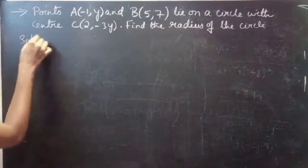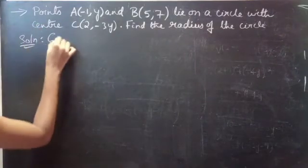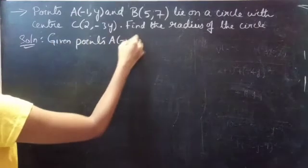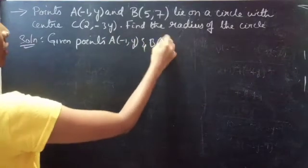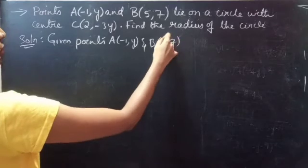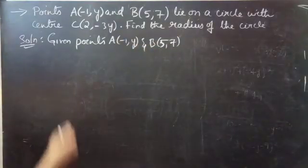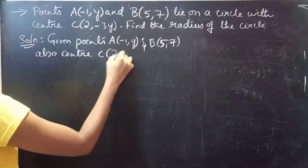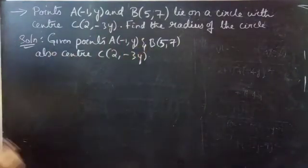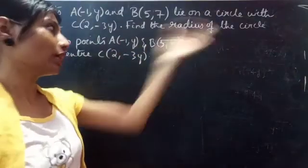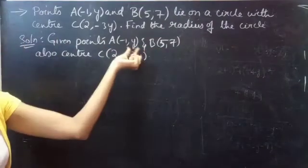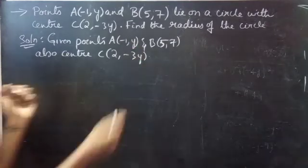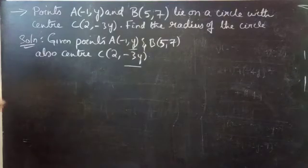Solution. Given points A(-1, y) and B(5, 7) — these are the coordinates of A and B. Also, center C is at (2, -3y). So here we have to find the radius of the circle and the unknown value y, since we have y in the ordinate. You can notice -3y and y are unknowns.